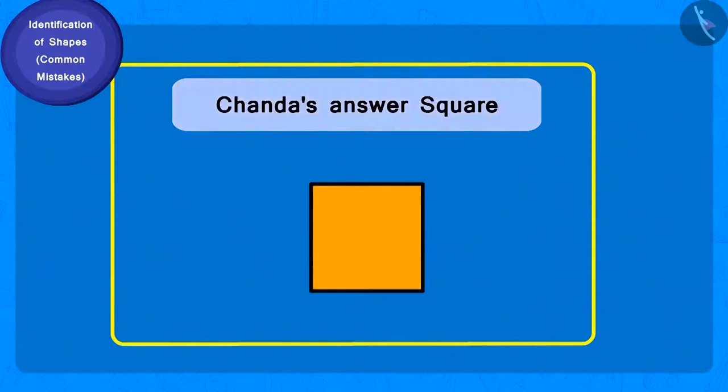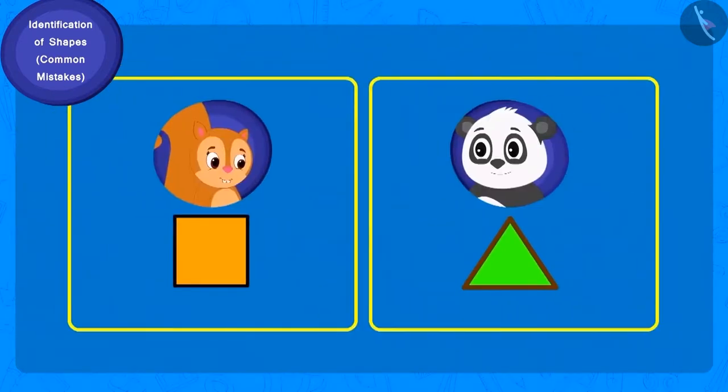Chanda has written square as her answer. How many sides does a square have? Four. And how many corners? Four. Are all the sides of a square equal in length? Yes.